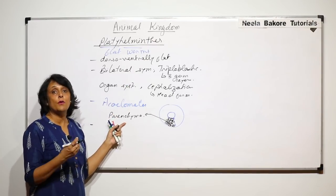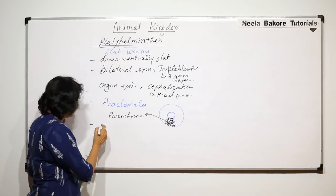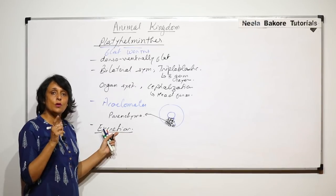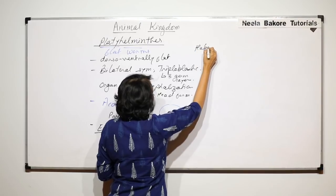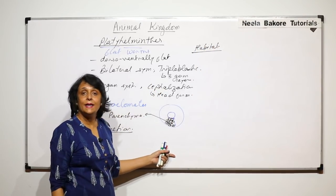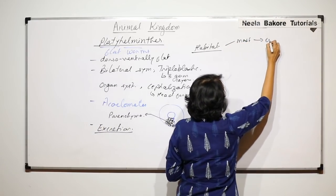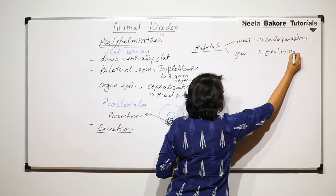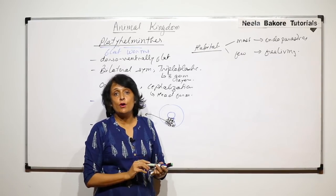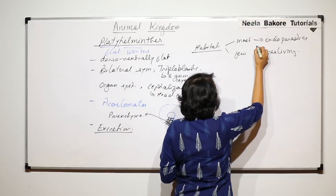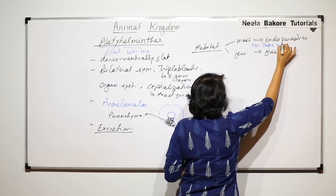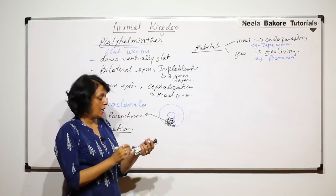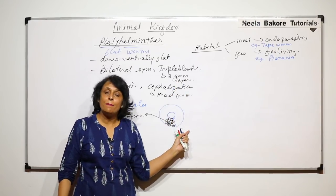Now let us consider their habitat — where are these platyhelminths found? Most of them are endoparasites and few are free living. Endoparasites include liver fluke and tapeworm, while free living forms include planaria. Tapeworm — Taenia solium — is an endoparasite, and planaria is a free living form found in fresh water.